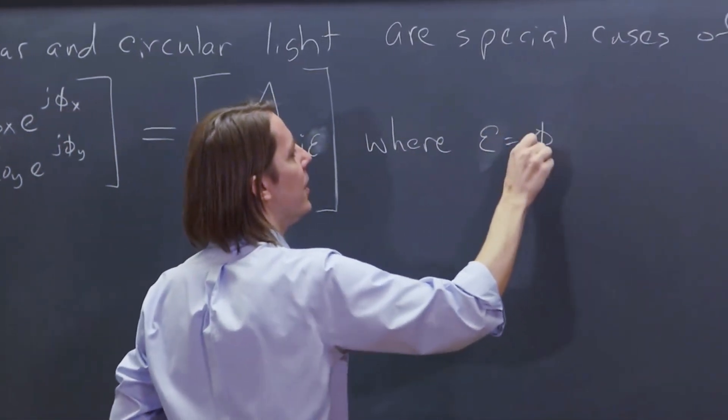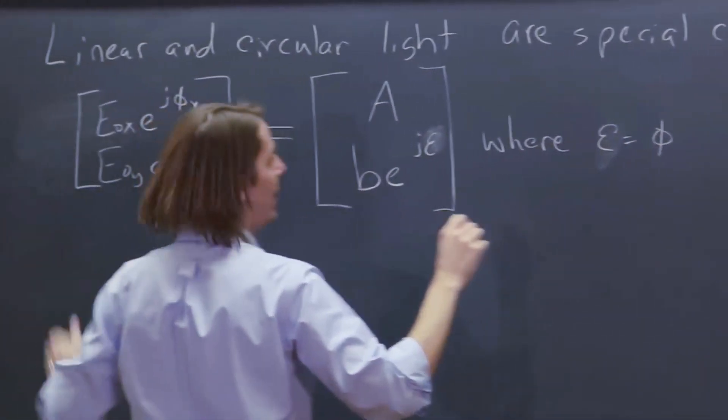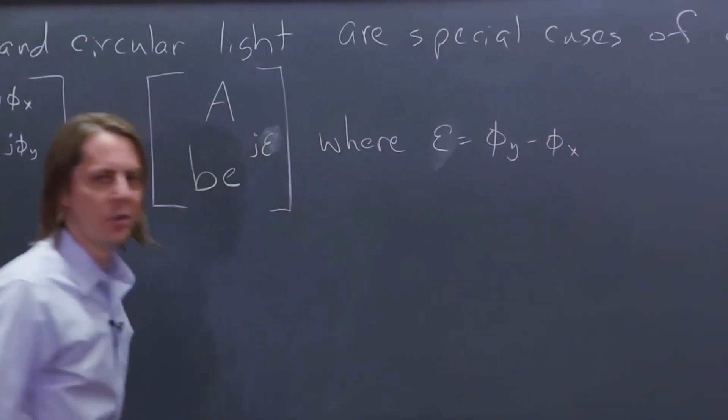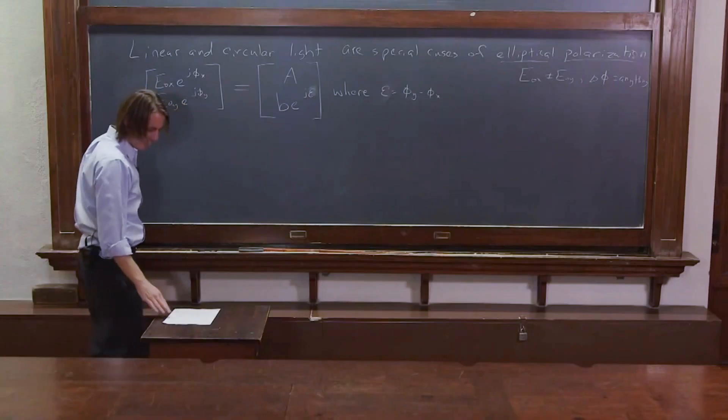Where epsilon equals Phi, in this case I divided it out, it's Y minus X. Sorry, I'm switching the order on you a little bit. You'll survive.